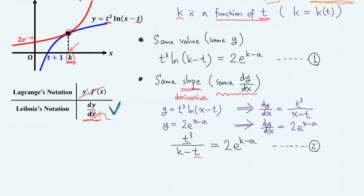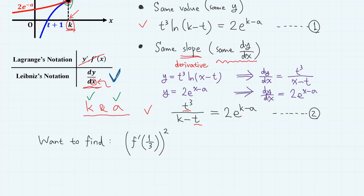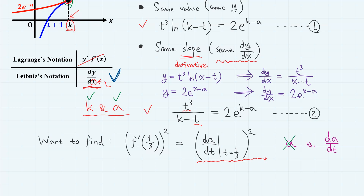If you consider t as a fixed constant, these are equations in k and a — as in many easier problems where you solve for k and a to determine the tangency point. But this problem is trickier. We want f prime of one-third, which is dA/dt when t equals one-third. We don't actually need to find a; we only need dA/dt. We can obtain it by differentiating one of the two equations with respect to t.